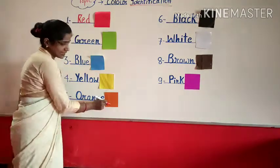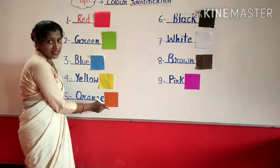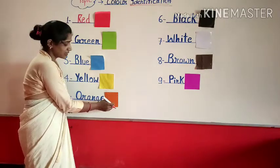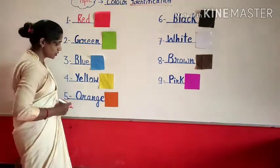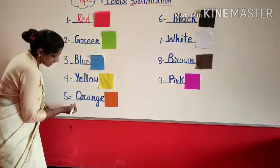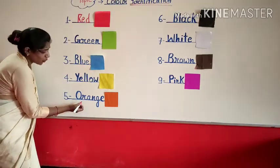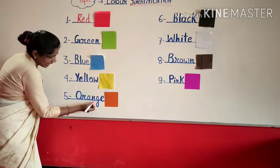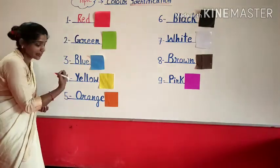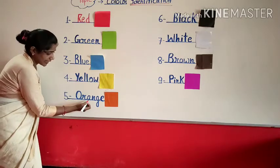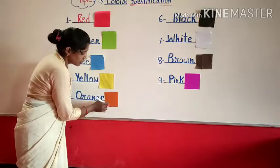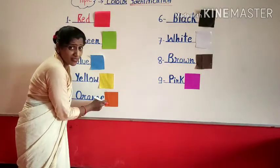Come to the next color. Which color is this? This is orange. And what is the spelling of orange? O-R-A-N-G-E. Once again, O-R-A-N-G-E. Orange. Which color is this? This is orange color.